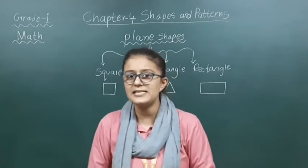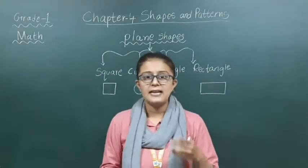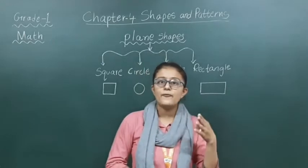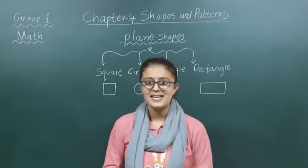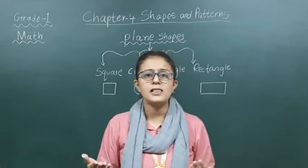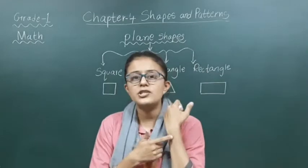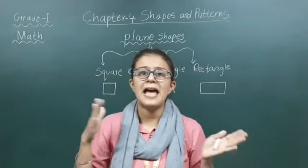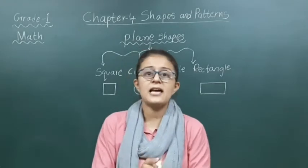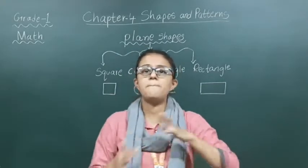How many sides does a square have? That is four sides, and they are all equal, and it also has four corners. So, everything around you — your wall, your window, your clock, your watch — everything around you has a specific shape. Students, there are also some solid shapes and also there are some plane shapes.